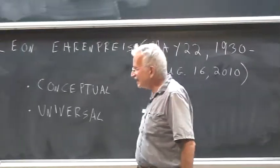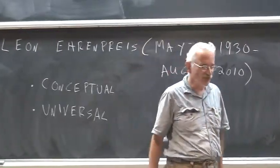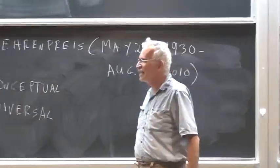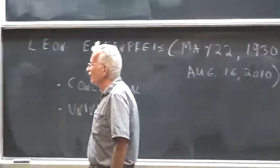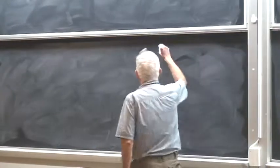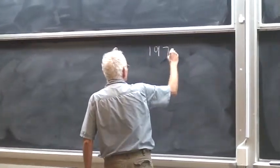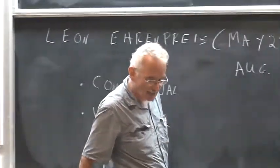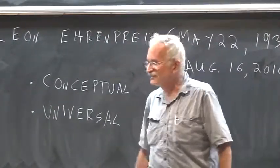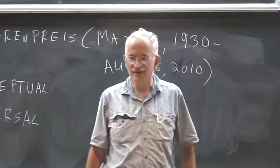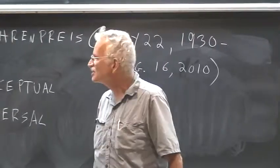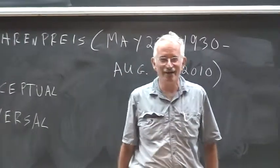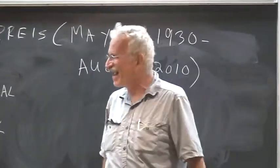He was not only a great mathematician, he was also a very interesting person. I met him for the first time, I think it was 1975, when I was a graduate student in Israel. And my teacher, Yaakov Kanai, told me about this great expert in partial differential equations, who is also a marathon runner and an ordained rabbi.